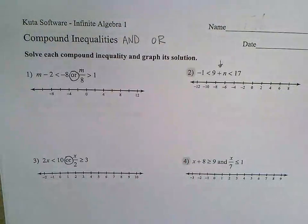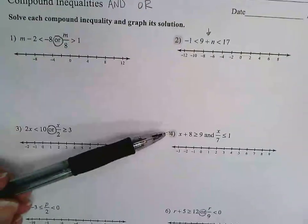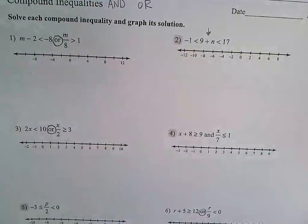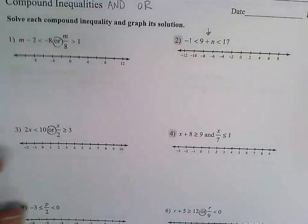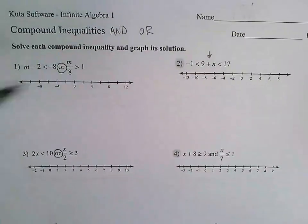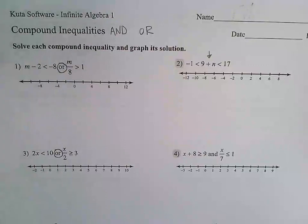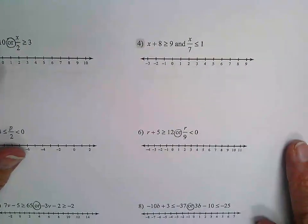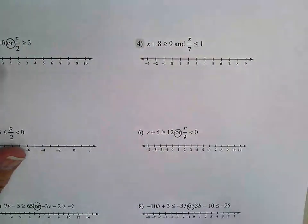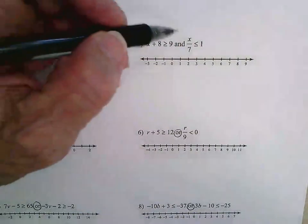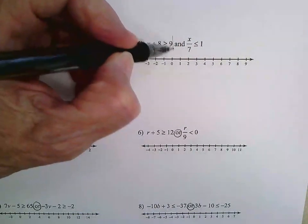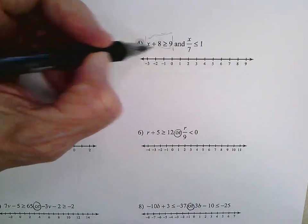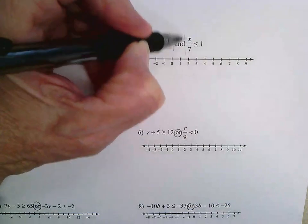So on your assignment for today, you're doing the grade ones first, so I'm going to do the ones that have the word 'and' in them first, and I'll come back to the other ones. When you solve a compound inequality, you basically just solve both sides of the inequality.